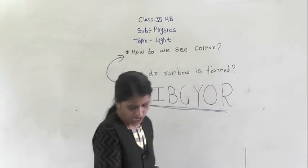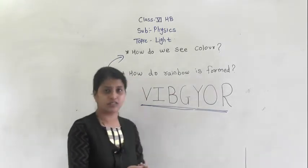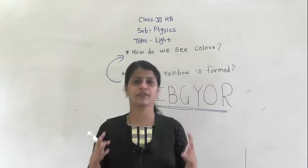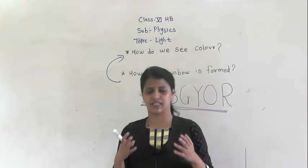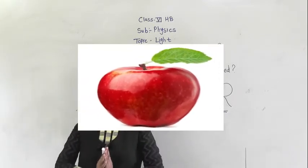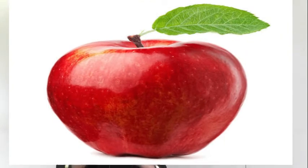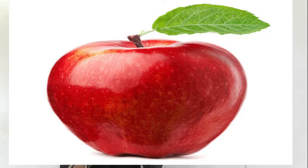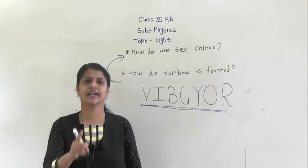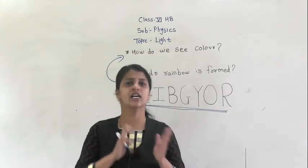So, how do we see colors? You can see different colors around you and detect all of them. What happens when light falls on a particular object? For example, take an apple. How do we see that an apple is always red in color? When white light falls on the apple, it absorbs all the light but reflects only one — that is red — and it is detected by our eyes.